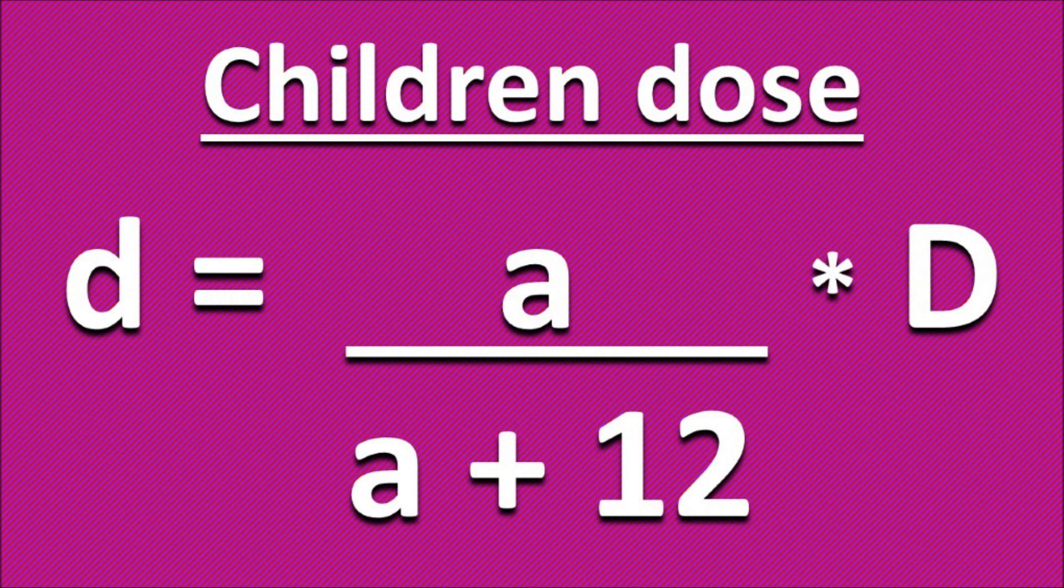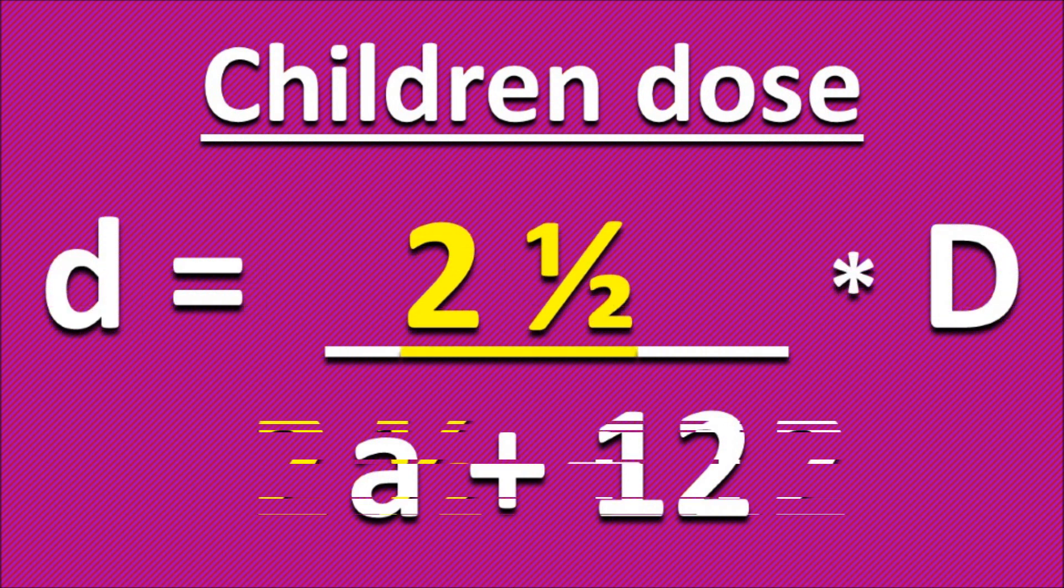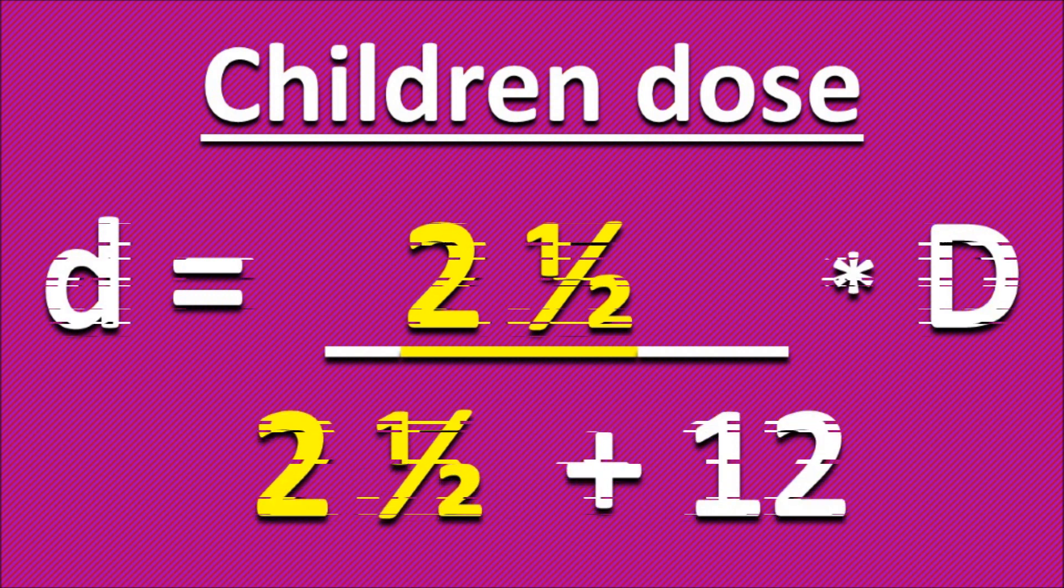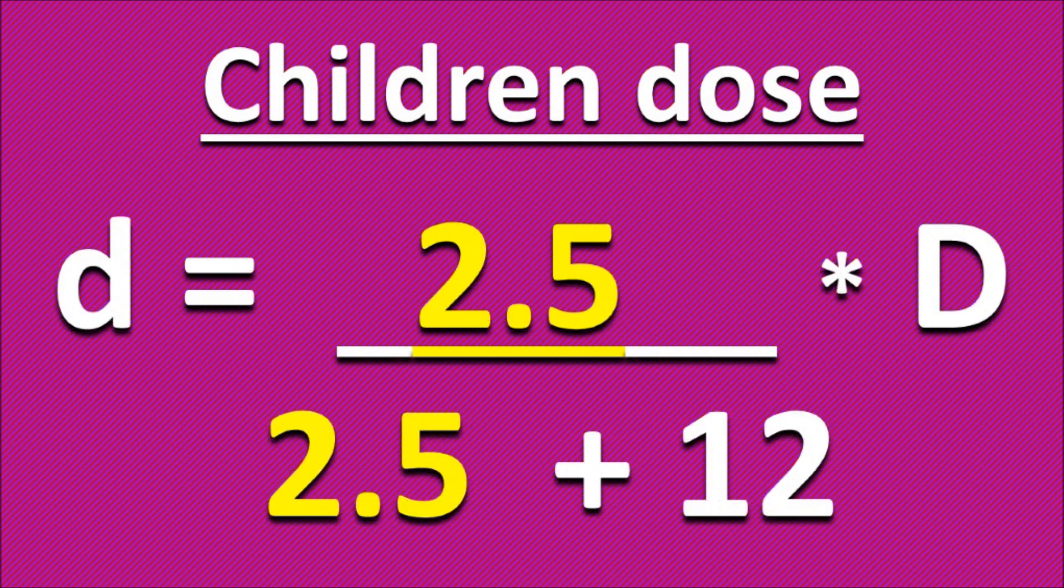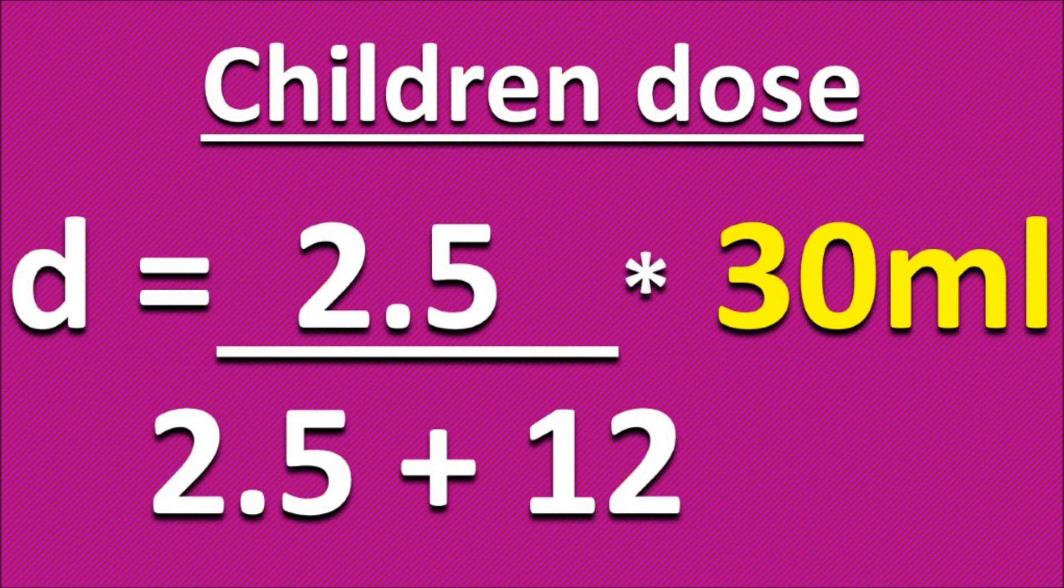Here we go back to our formula. We know that A is the child's age, which is two and a half years, and we're going to put that in a decimal form, make it 2.5, so it'd be easier to calculate. We know that capital D is the adult dose, which is 30 milliliters.